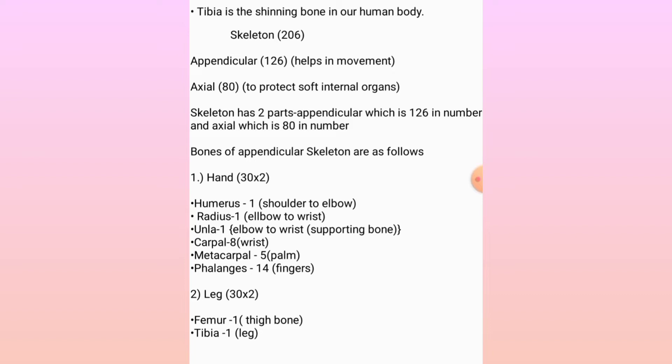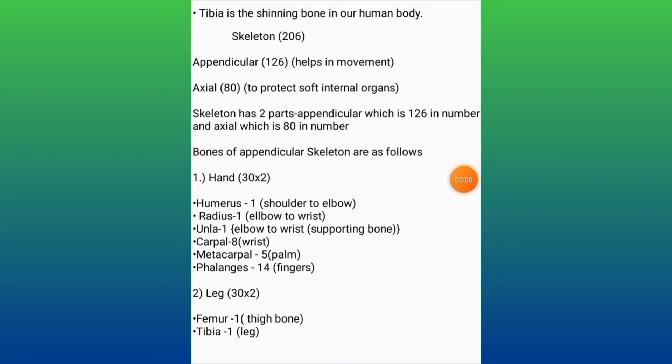Bones of the appendicular skeleton — hand: humerus 1 (shoulder to elbow), radius 1 (elbow to wrist), the supporting bone in the hand; carpals 8 (wrist), metacarpals 5 (palm), phalanges 14 (fingers).